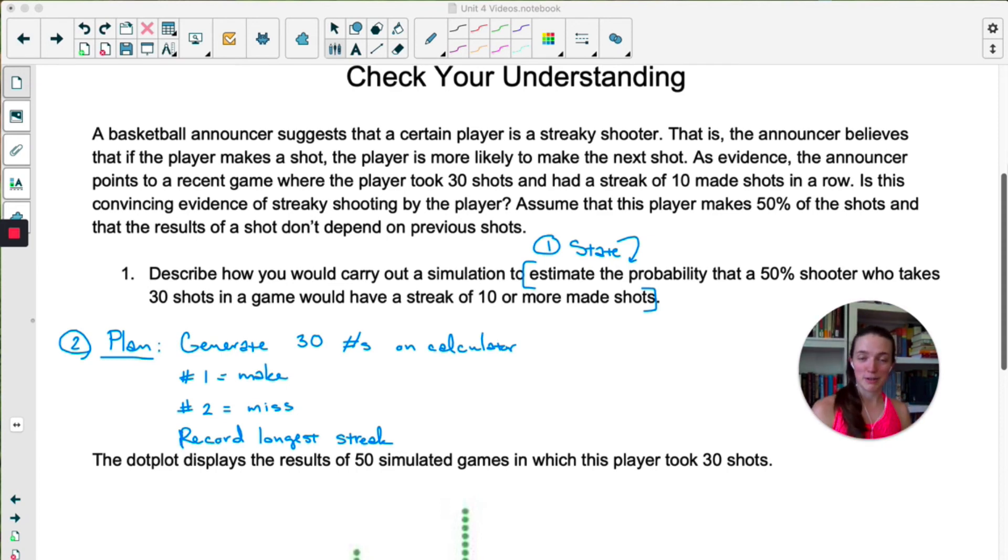So we're going to go through the four-step process. State one was done for us. It says to estimate the probability that a 50% shooter who takes 30 shots in a game would have a streak of 10 or more. That's state.